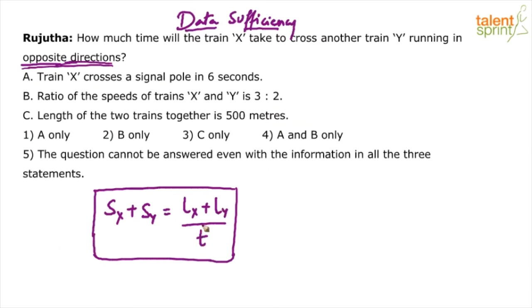We have to find out the time t. You have to find out what is the time t. T equals what is the question. How much time will it take? So basically, our requirement is to find t, which means we should know what is Lx, what is Ly, what is Sx and Sy. Four variables have to be found.